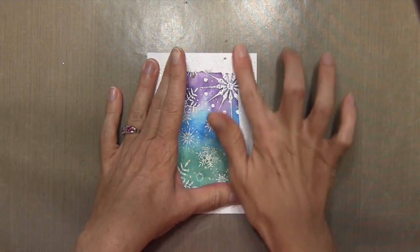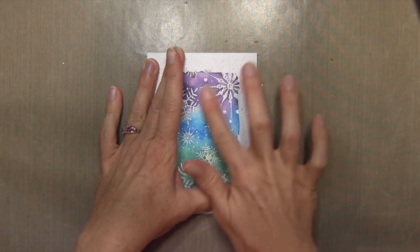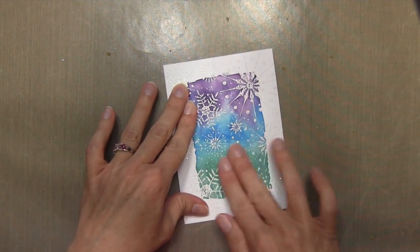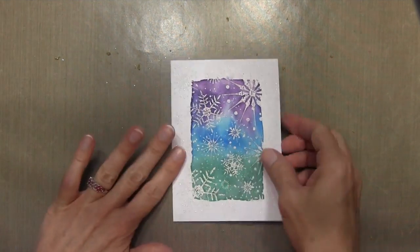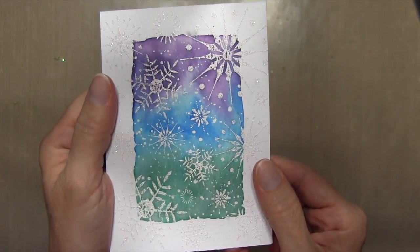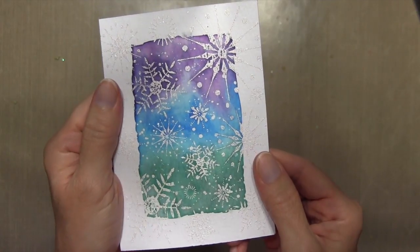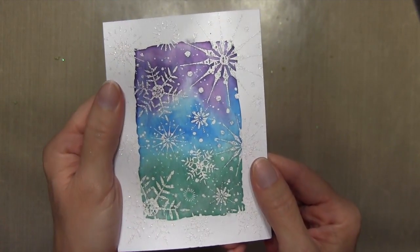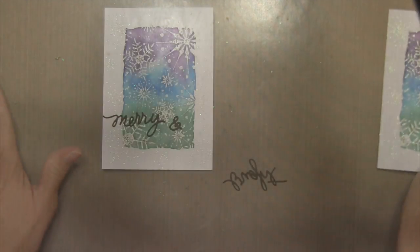So I let that completely dry. And then I can take off my masking fluid, which is really easy to take off. You just rub it with your finger and it comes right off. And where I had the masking fluid on the white card stock, it just rubbed off with no effect. So I have these really cool sparkly snowflakes that extend from the watercolor panel out to the white panel.